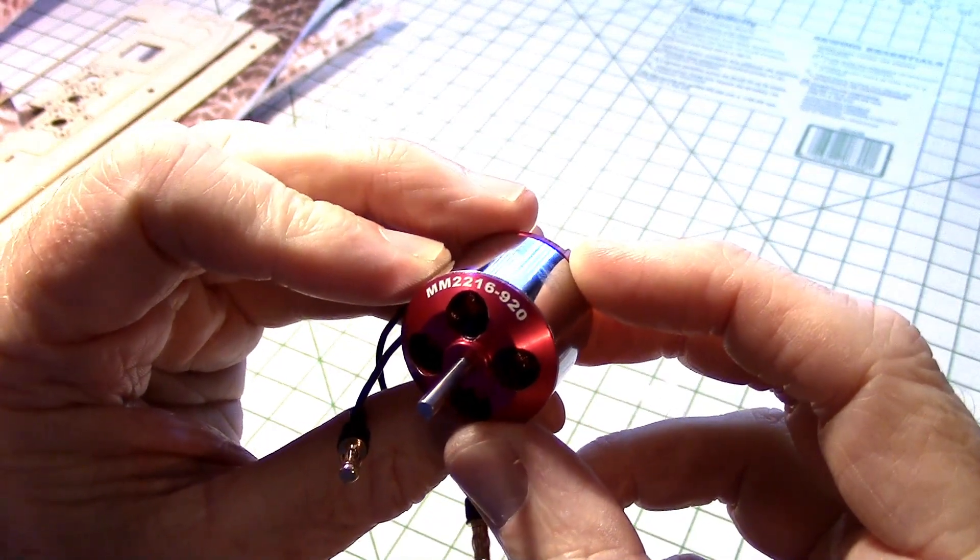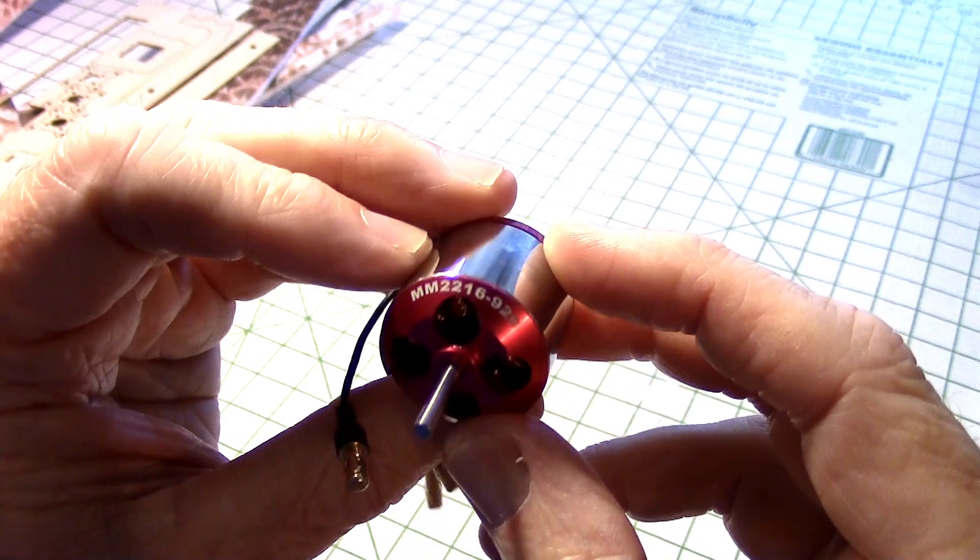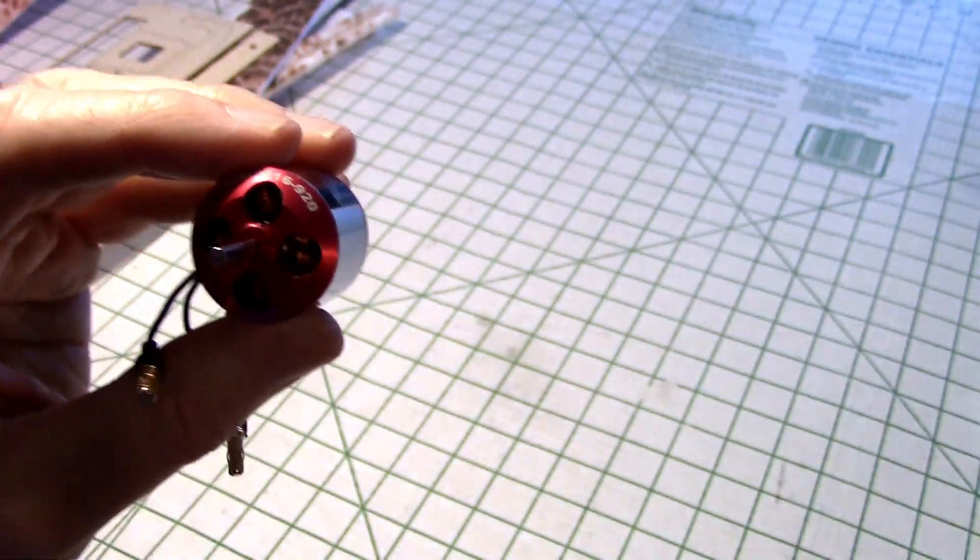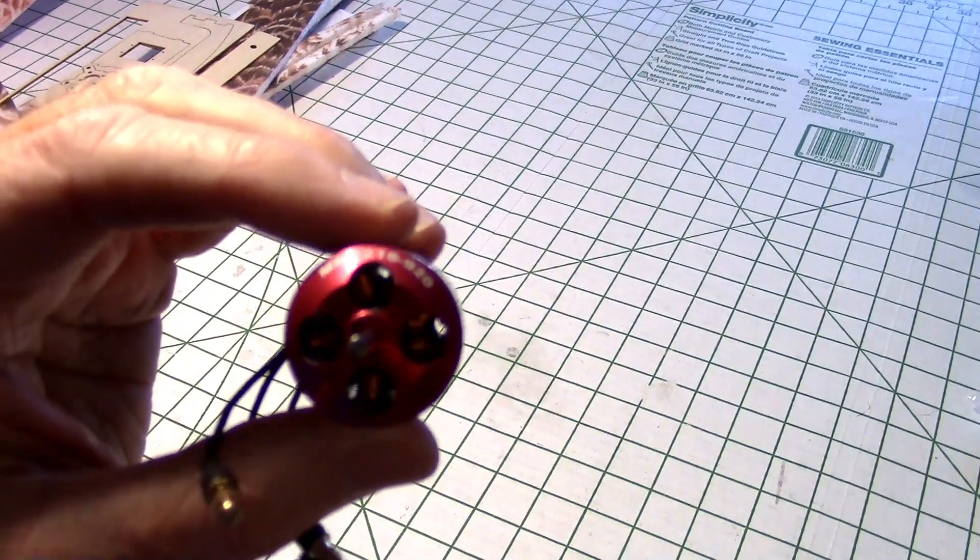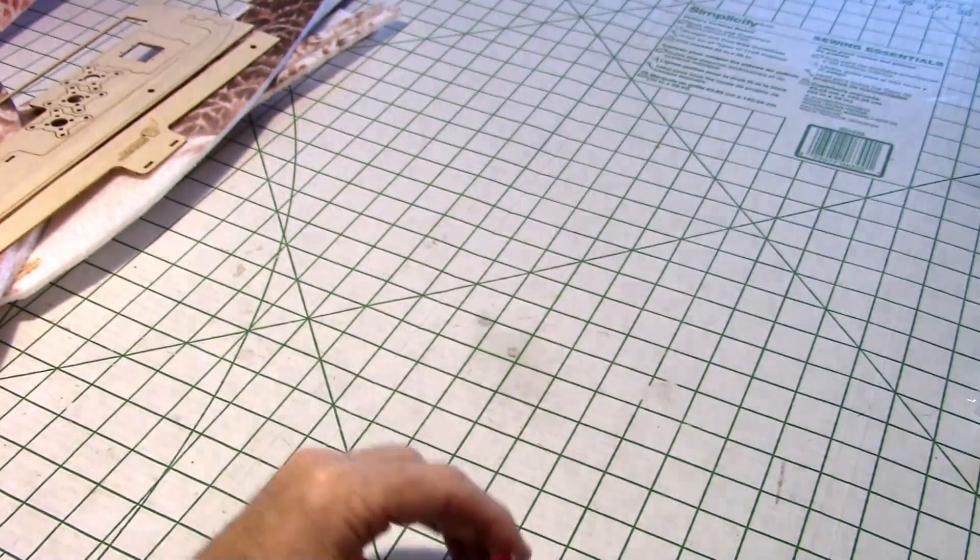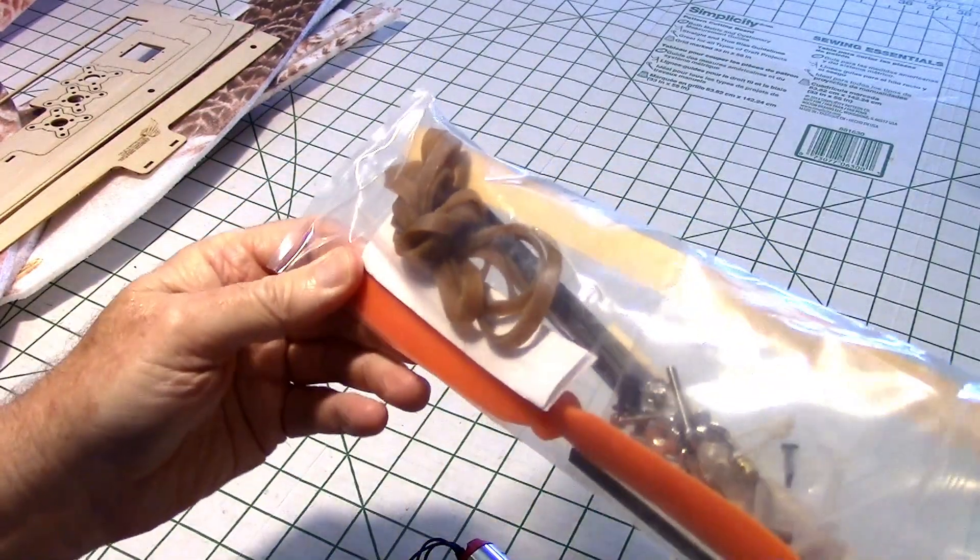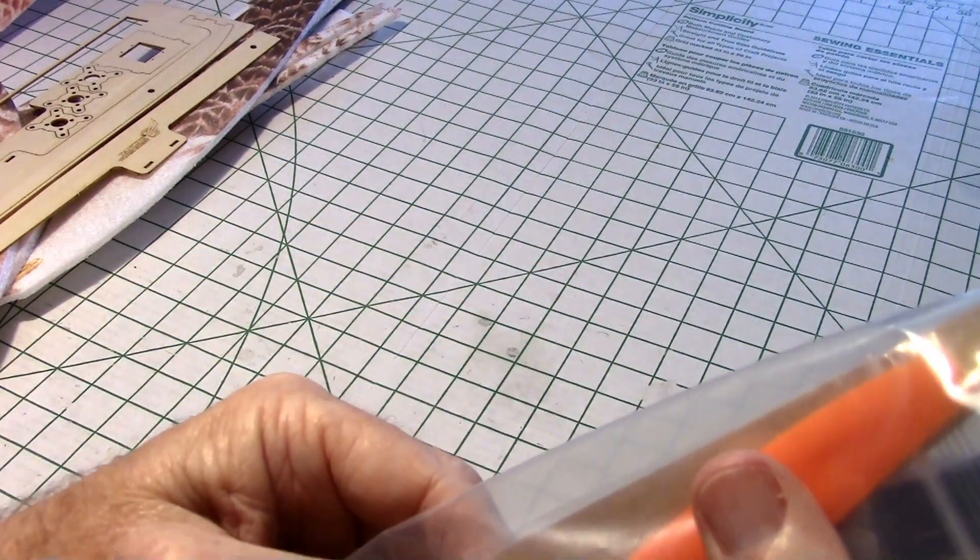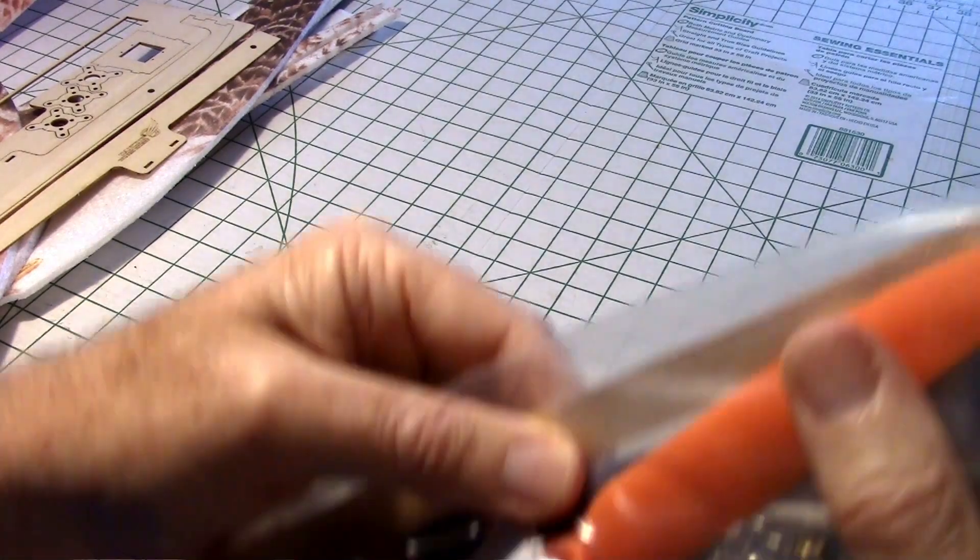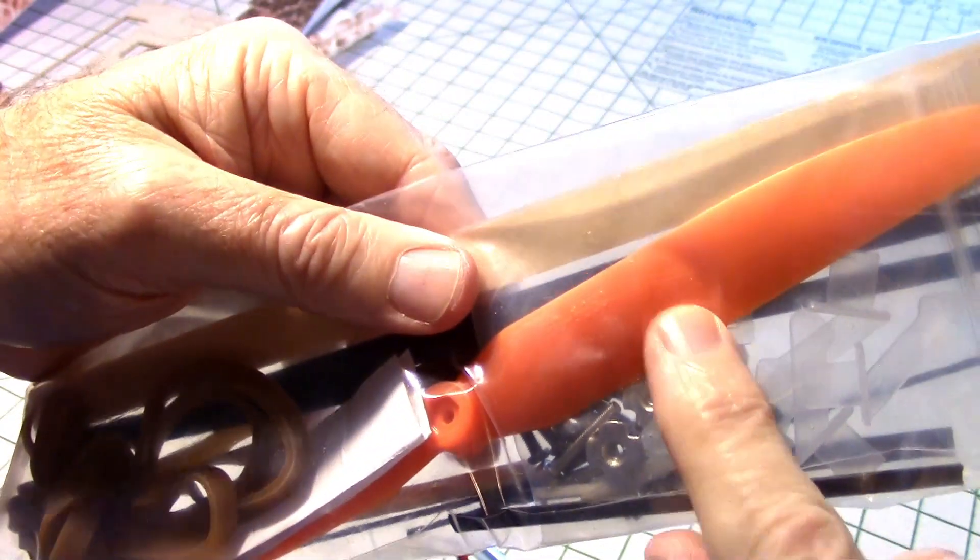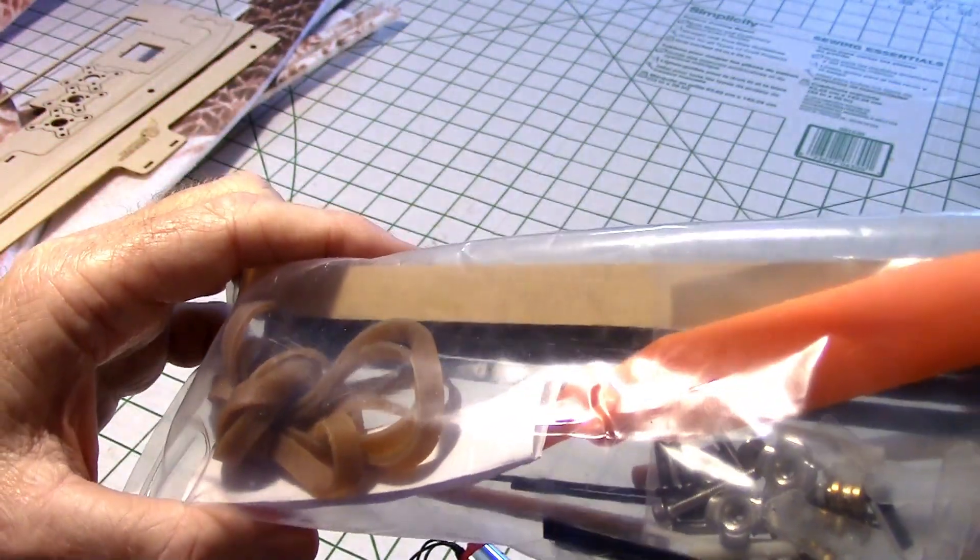Okay, moving on to the motor, 2216 920, so this is a 920 kV motor. And you remember I had trouble with a 980 kV on the other one that just wasn't spinning fast enough, but I had a smaller prop. This has a larger prop that comes in the package right here and it is a 9 by 5 3, I believe you can see it right there. I haven't got it out of the bag yet but a 9 by 5 3.